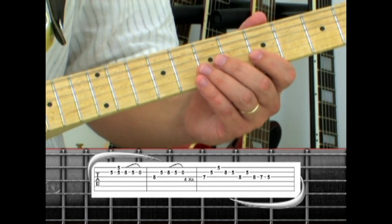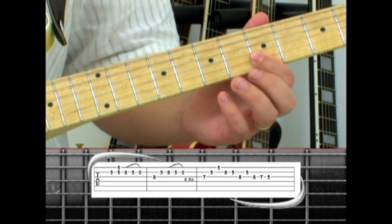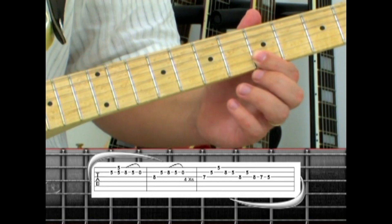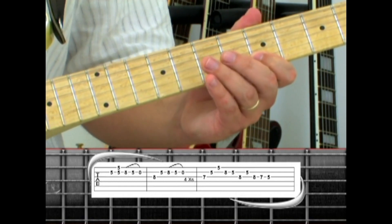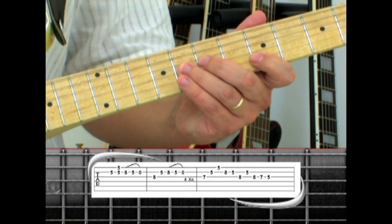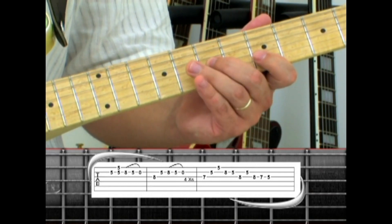Phrase two ends with the ring finger on the third string seven to second string five, then first string five. Ring finger on the second string eight, five, third string eight, back to second string five, third string eight, seven, five.